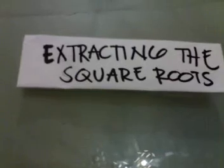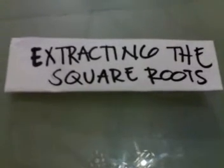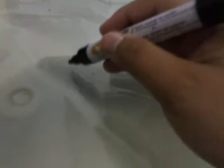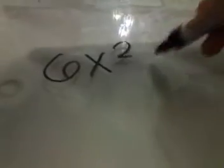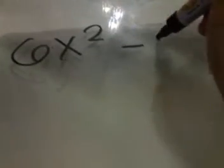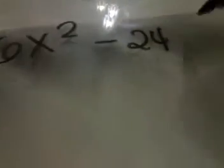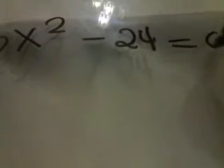First, we will discuss all about extracting the square roots. Let's have this as an example: 6x squared minus 24 is equal to 0.